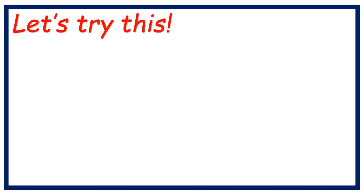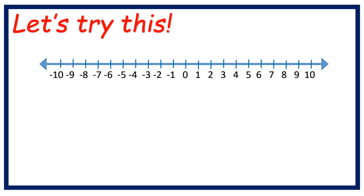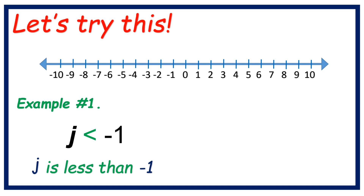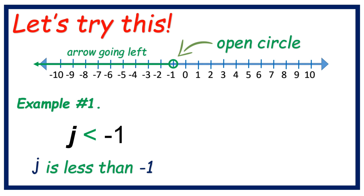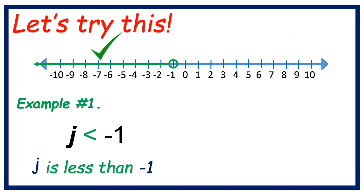Let's try this. This is an example of a number line. We're going to graph the inequality using this number line. Example number 1: J is less than negative 1. How are we going to graph this inequality? First, look for negative 1. Then draw an open circle, and decide whether the arrow is going to the left or right — just look at your symbol. Your symbol is pointing to the left, so we must use an arrow going left. That's it.